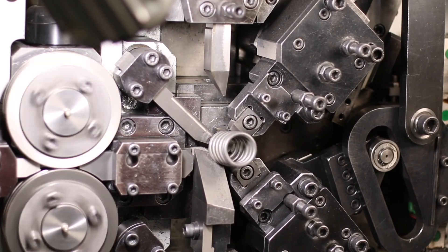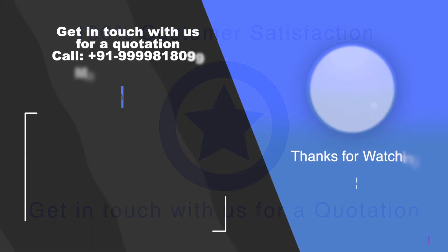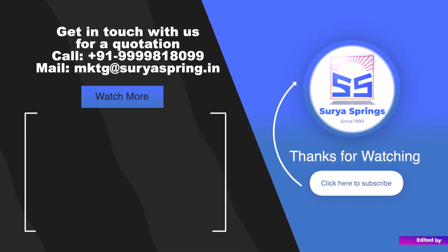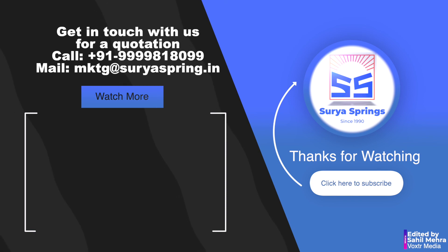Get in touch with us for a quotation. Call +91 9999818099, or mail us at mktg@suryaspring.in. Watch more of our videos by clicking the playlist button and consider subscribing. Thanks for watching.